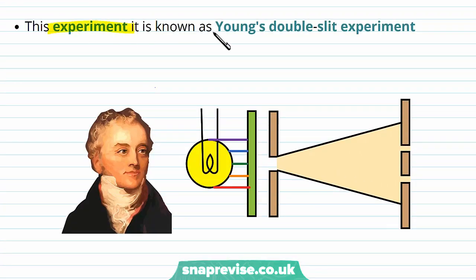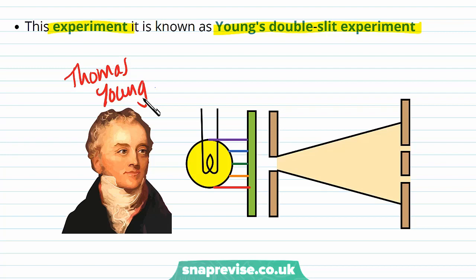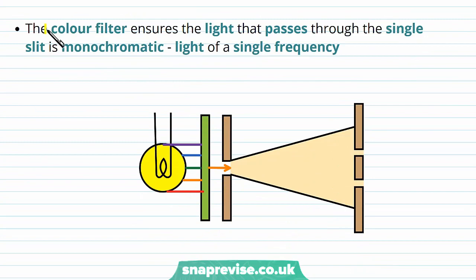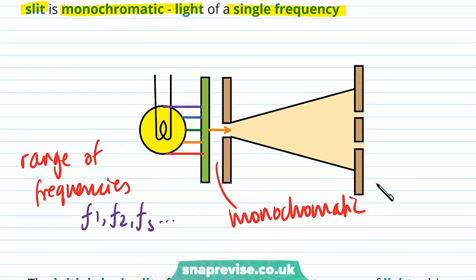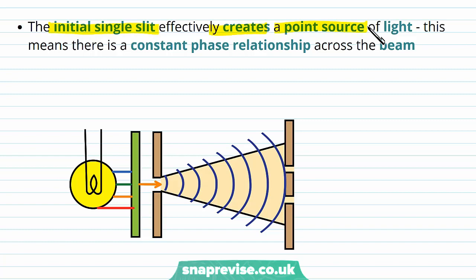This experiment is known as Young's double slit experiment. Thomas Young was the person who first came up with this experiment to demonstrate the interference of light. The colour filter ensures the light that passes through the single slit is monochromatic light of a single frequency, since white light has a range of frequencies due to all the different colours it's made up of. The initial single slit effectively creates a point source of light, meaning there is a constant phase relationship across the beam.